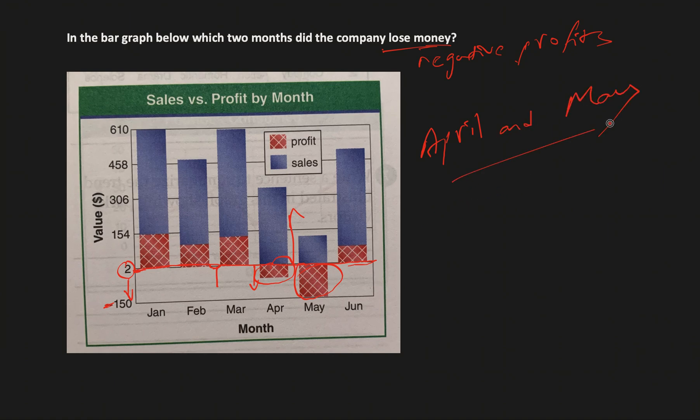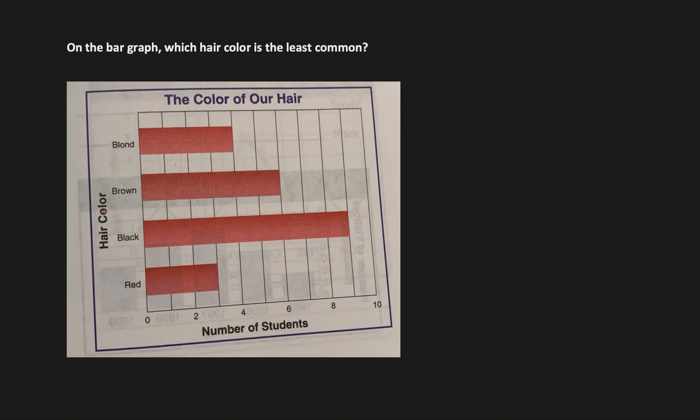These were the two months where the company made negative profits, or we can also say that in the month of April and May the company lost money.